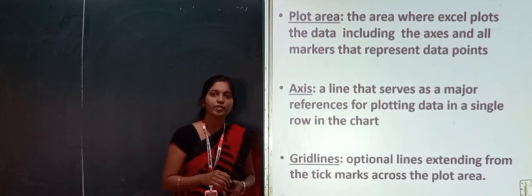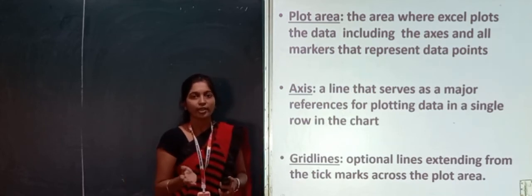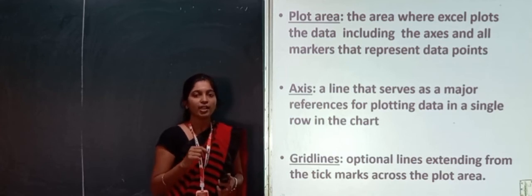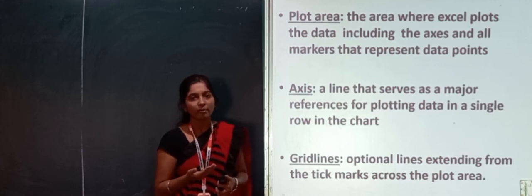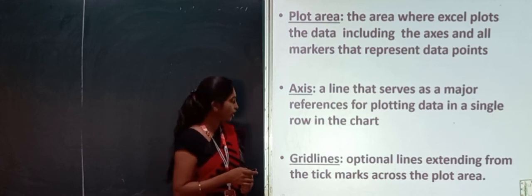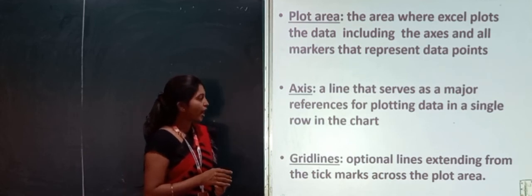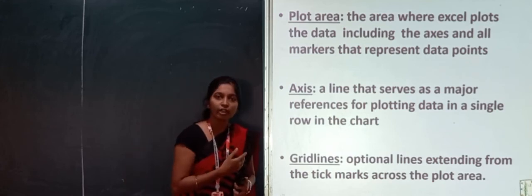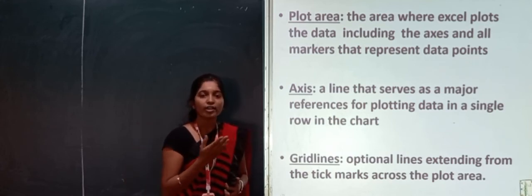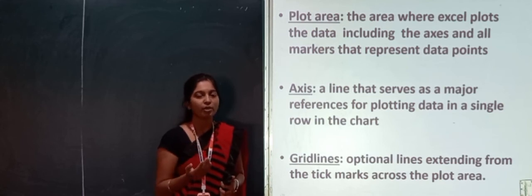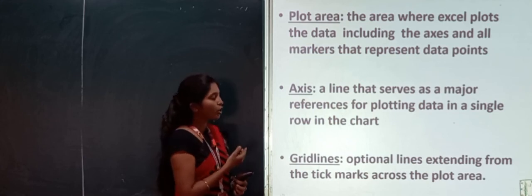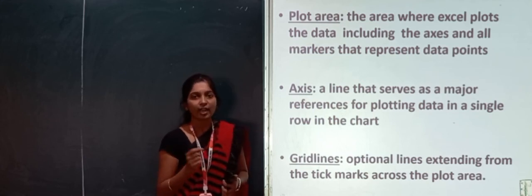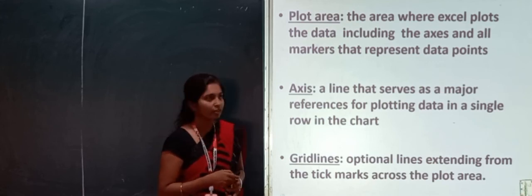There are two axes — vertical as well as horizontal — along which our data series is plotted in the chart. Then grid lines are the optional lines extending from the tick marks across the plot area. The horizontal lines in the chart are grid lines. These are optional — you can use them or hide them as needed.